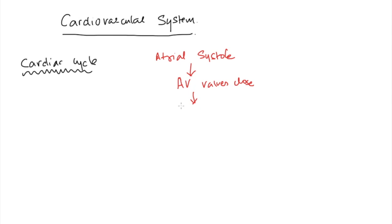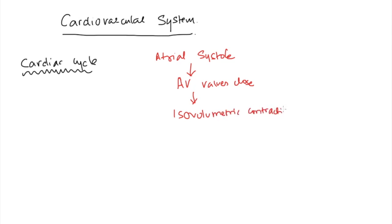Now the ventricle is an isolated chamber — the AV valves are closed and so are the semilunar valves, that is the aortic and the pulmonary valves. The pressure inside the ventricle goes on increasing as the myocardium starts contracting, but the volume does not change. That phase of contraction is called isovolumetric contraction — there's no change in volume, only an increase in pressure.